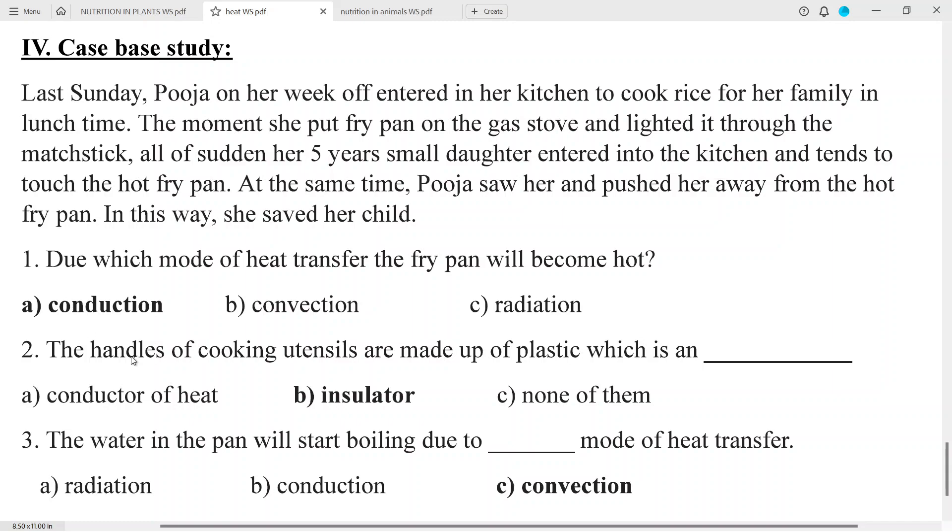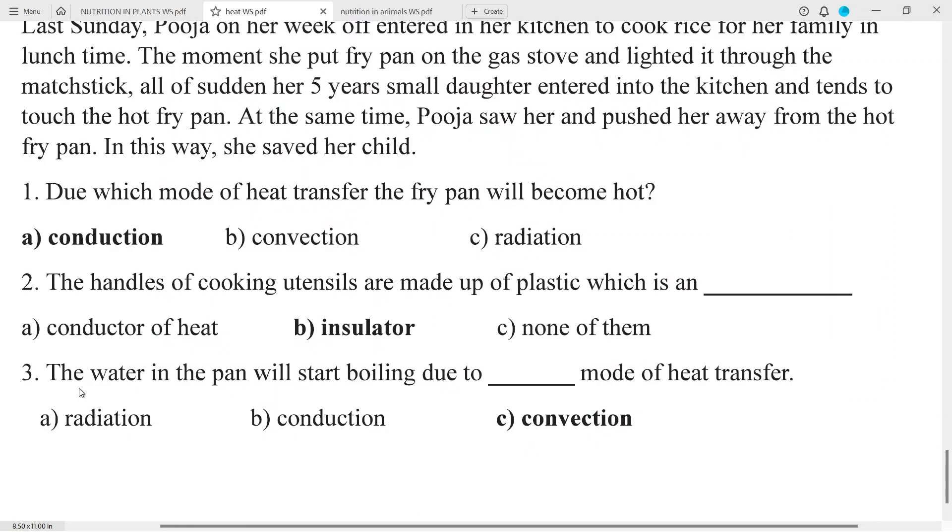Answer: Conduction. Question number 2: The handles of cooking utensils are made of plastic which is an answer: insulator. Question 3: The water in the pan will start boiling due to which mode of heat transfer? Answer: Convection.